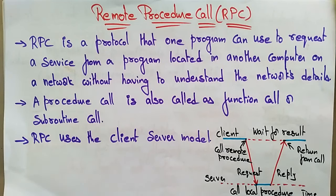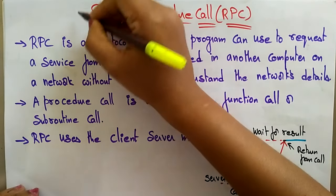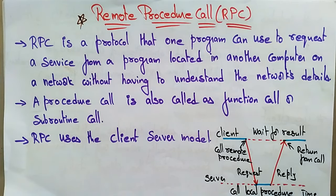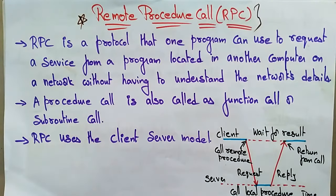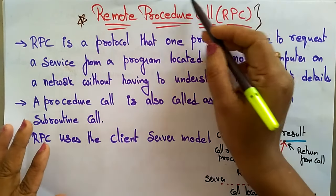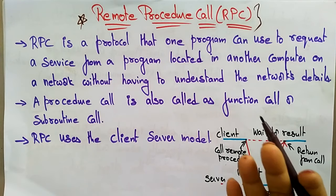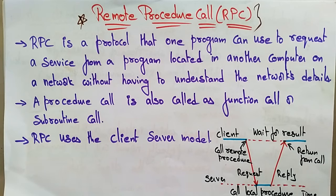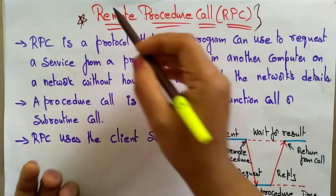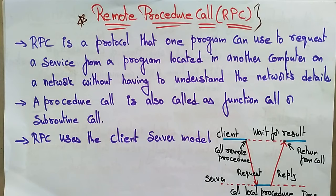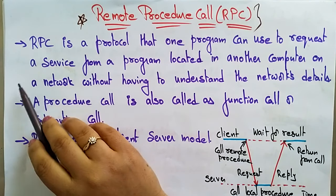Welcome back. The next topic in distributed systems is Remote Procedure Call — RPC — which is one of the important concepts in this subject. Whenever you see a topic, read the word a few times to understand what they are asking. Here they are saying 'remote procedure call': a procedure call means you are calling a module which is present somewhere else, and 'remote' means it is present on another machine.